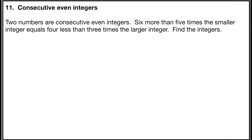Problem number 11 is consecutive even integers. It says two numbers are consecutive even integers. Six more than five times the smaller integer equals four less than three times the larger integer. Find the integers. All even numbers are two spaces apart on the number line. So I have two numbers to define variables for. The first integer is going to be x, and the second number, since even integers are two spaces apart, will be x plus two.